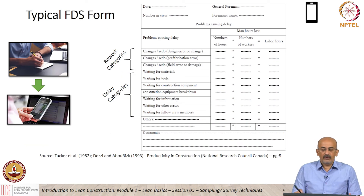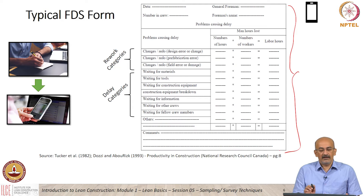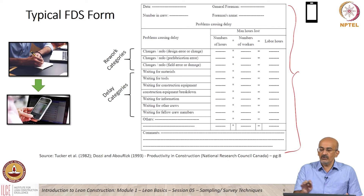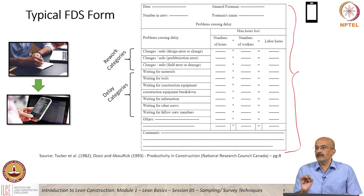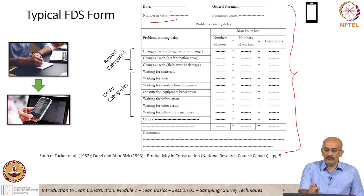When you go into the form they have to fill out, one of the real enablers is that the form is fairly simple. In the orientation program, they have to be taught how to fill the form. The form is not necessarily fixed — while most people use the format shown here, if you would like to have any other category, it is more than okay to add something that is relevant to your project and delete something that is not relevant. If you analyze the form, you have some general information on the crew, date, foreman name, and the key is the categories of delays.